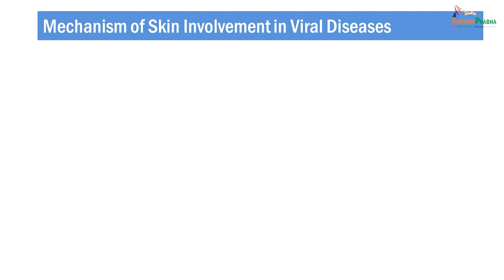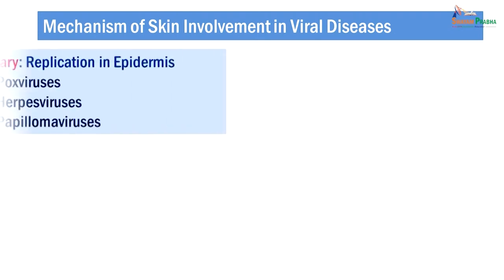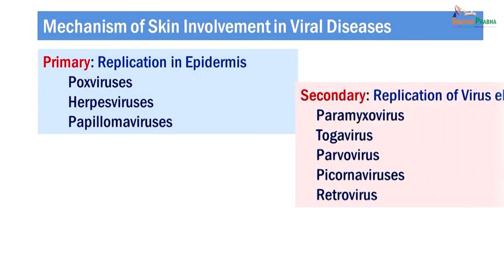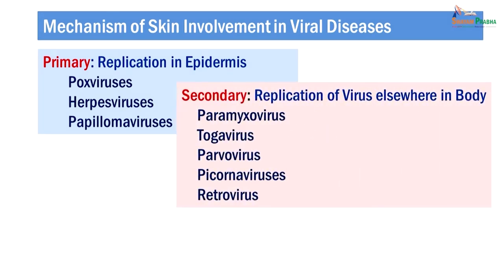Basically there are two mechanisms by which skin involvement in viral diseases occurs. In primary skin involvement, there occurs replication of virus in the cells of the epidermis, and this replication is actually responsible for the lesions, and the virus can be isolated from the skin lesions. Pox viruses, some herpes viruses, and papilloma viruses cause skin involvement by this primary mechanism. In secondary skin involvement, many other viruses cause manifestations where replication does not occur in the epidermal cells but occurs elsewhere, and the manifestations are observed as cutaneous manifestations, usually due to immune response or immune mechanism.